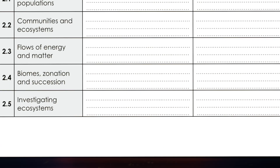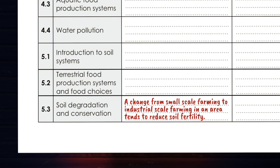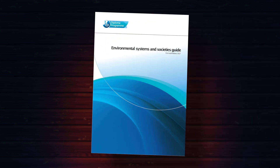For example, here for topic 5.3 — soil degradation and conservation — an environmental issue could be: a change from small-scale farming to industrial-scale farming in an area tends to reduce soil fertility. Don't feel like you can't think up an environmental issue for a topic just because you haven't studied it yet. A quick flick through the course guide and textbook will give you plenty of ideas.